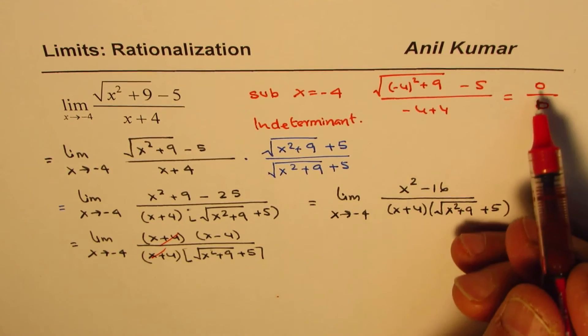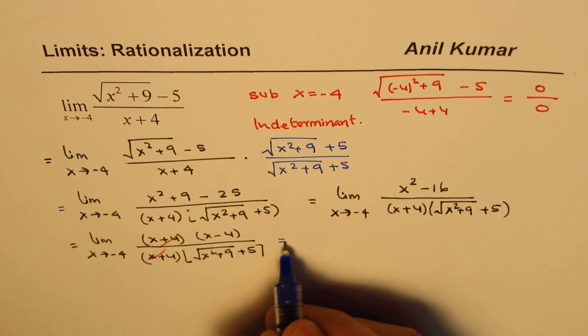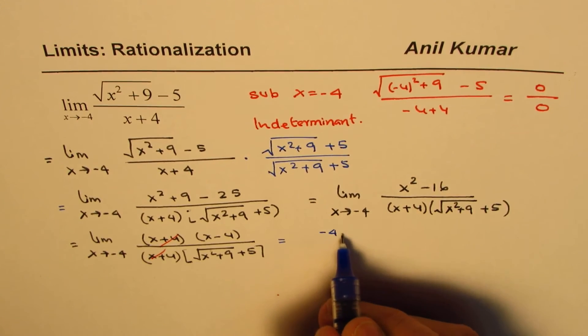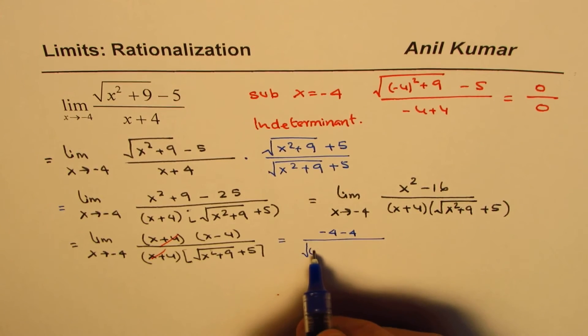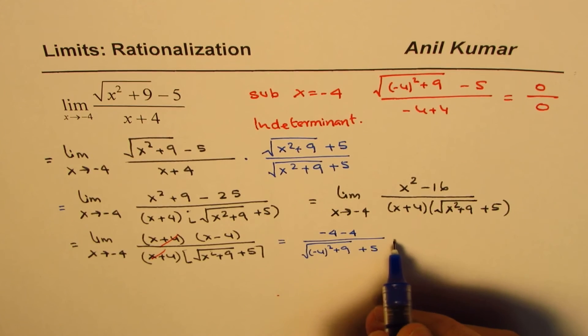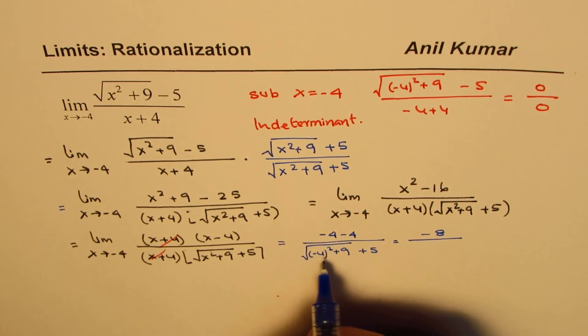That was giving 0 over 0, but now we can actually substitute minus 4. Substituting minus 4, I get (-4-4) divided by √((-4)²+9) plus 5.